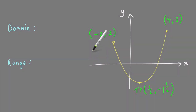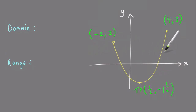Hi, it's Michael from the Mathematics Workshop, and in this lesson I'm going to show you how to find the domain and range of this parabola. The domain is the set of x values that belong to the graph, and the range is the set of y values that belong to the graph.